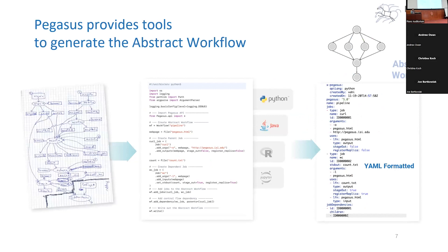Pegasus provides tools to generate this input abstract workflow. We provide APIs in Python, Java, and R. The most popular one is a Python API which is a full-fledged workflow API that allows you to compose workflows, submit them, monitor them, and do all the tracking through the API itself. The API ends up generating the abstract workflows in the YAML format, which is self-explanatory and pretty easy to read.